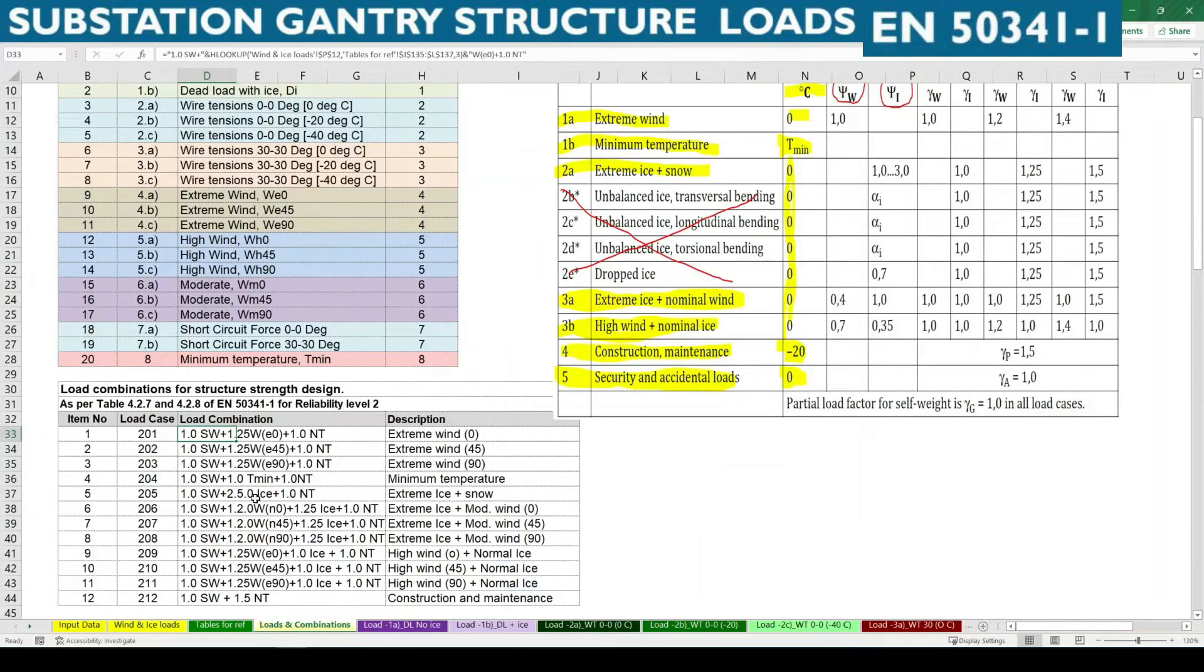The load combinations, so then that load combination table there is a mistake to be rectified. So it should be 1.2 as per the table shown in the picture above in the right hand side. So now it is corrected as correct load combinations.